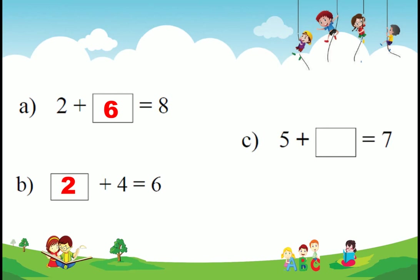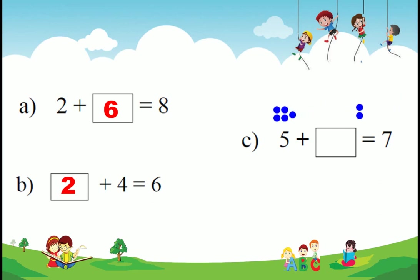One more example: 5 plus dash equals 7. The sum of these two numbers is 7, so we put 7 dots: 1, 2, 3, 4, 5, 6, 7. The first number is 5, so we move 5 dots here. The remaining dots are the finding number. How many dots are there? 2. So 5 plus 2 equals 7.